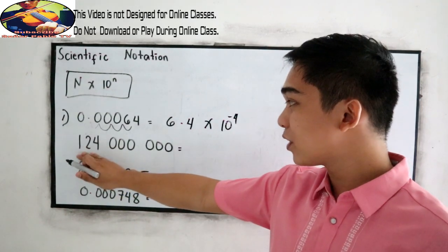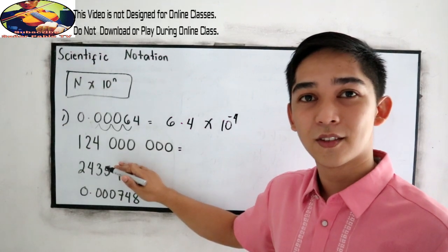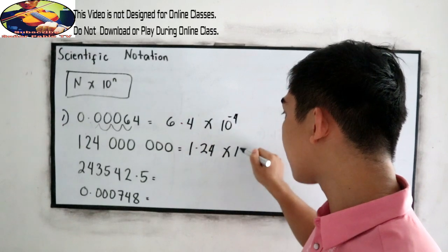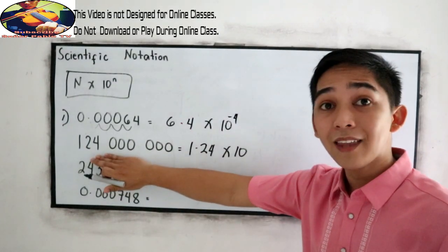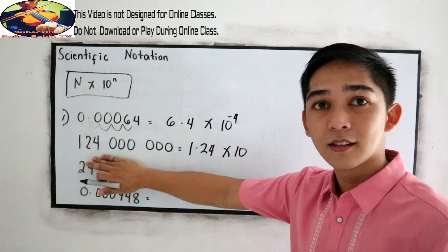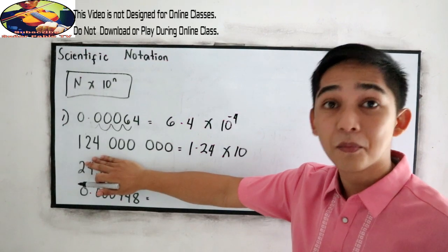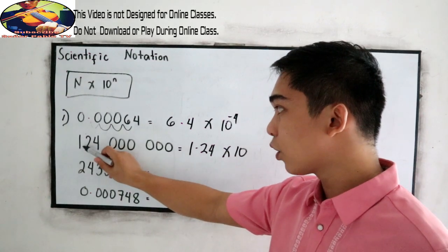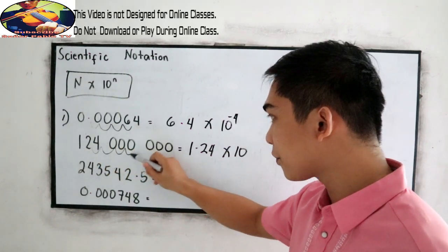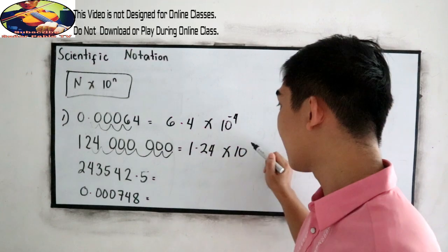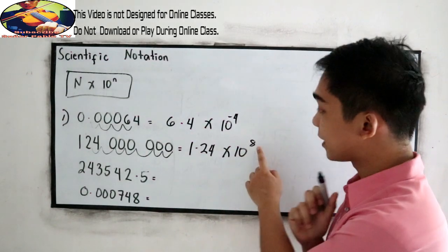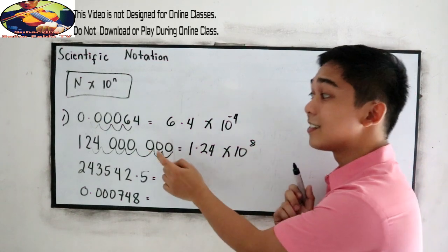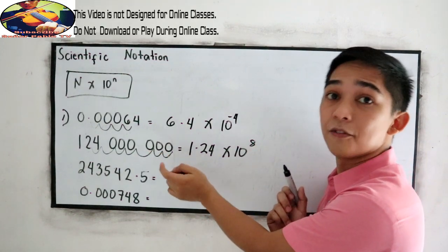Next, 124 million. That can be written as 1.24 times 10. We know that 124 million is a large number, so we move the decimal point 1, 2, 3, 4, 5, 6, 7, 8 — eight places. Is it positive or negative? Positive 8, because this number has a large value. So it is 1.24 times 10 raised to positive 8.